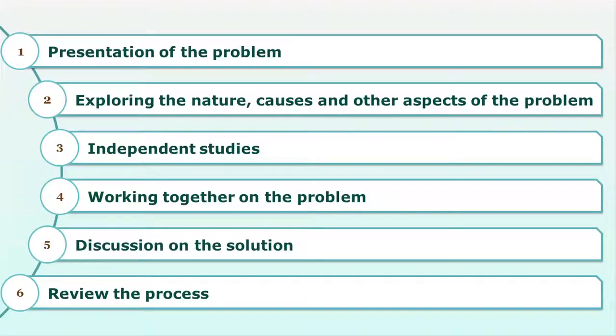Like any other instructional method, PBL follows certain procedures and stages. There are six steps: first, presentation of the problem; second, exploring the nature, causes, and other aspects of the problem; third, independent study; fourth, working together on the problem; fifth, discussion on the solution; and sixth, review of the process. Let's go through them one by one.